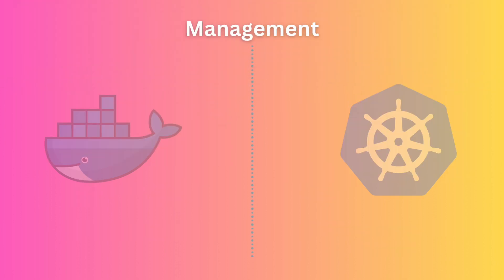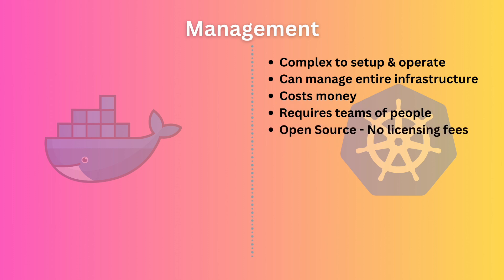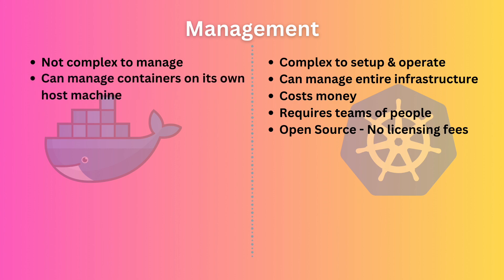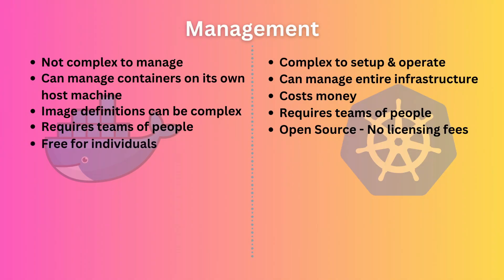When it comes to management, Kubernetes is a whole beast. It is a very complex piece of software with the potential to manage your entire infrastructure. But it is not an easy task to operate Kubernetes — it costs a lot of money, and sometimes you need whole DevOps teams to manage your cluster. But it is open source, so there are no licensing fees for using Kubernetes itself. Docker, on the other hand, is a lot less complex. It runs even on a laptop with pretty much no maintenance overhead. But Docker's complexity shows when you're developing images for your applications — the code can get really tangled. Docker itself is free to use, but Docker Desktop has licensing fees for large enterprises, so be sure to check the pricing.